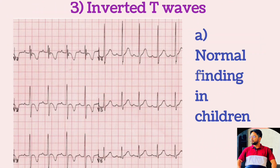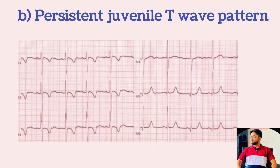Inverted T-waves are seen in the following conditions. As a normal finding in children, T-wave inversion in the right precordial leads V1 to V3 represents the dominance of right ventricular force. In the persistent juvenile T-wave pattern, T-wave inversion in the right precordial leads may persist into adulthood and is most commonly seen in young females. Persistent juvenile T-waves are asymmetric, shallow, and usually limited to V1 to V3.